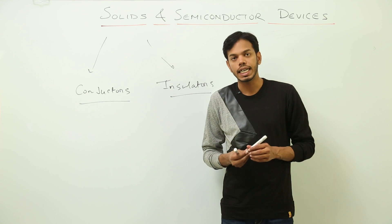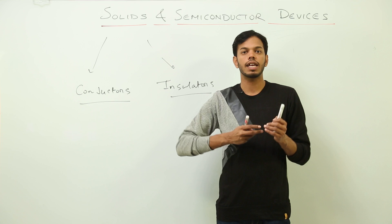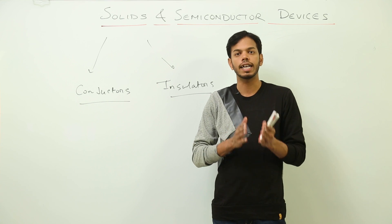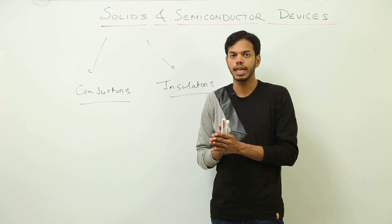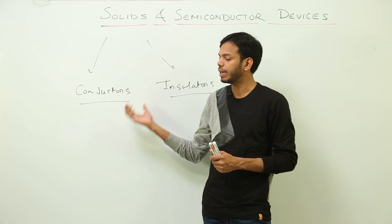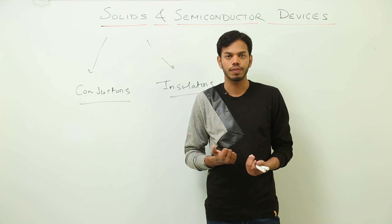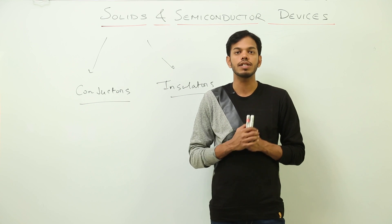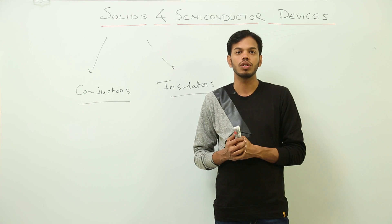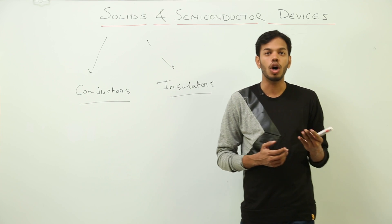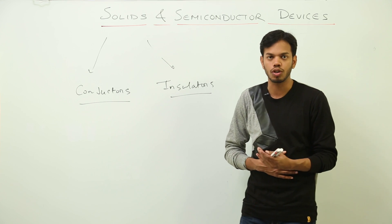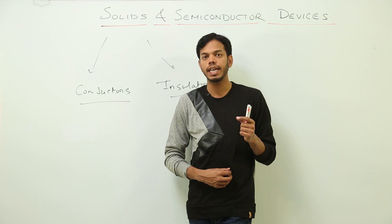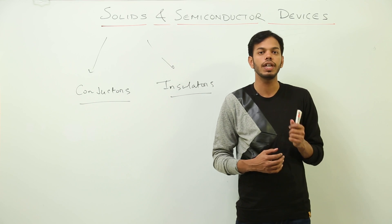Even conductors and insulators are made up of basic atomic structure — atoms and molecules. So why do conductors conduct but insulators don't? The difference is the presence of free electrons, also called conduction electrons.